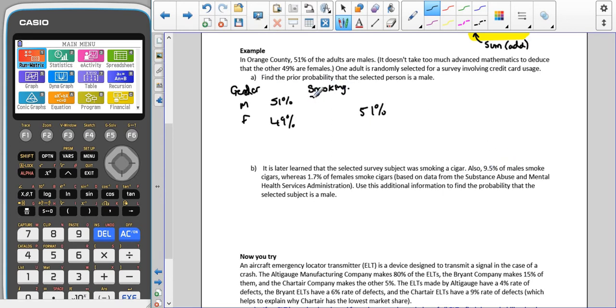9.5% of males are known to smoke cigars, whereas 1.7% of females is known to smoke cigars, based on data from substance abuse and mental health service administration. So now we're trying to use the additional information to find the probability that the selected subject is male. So the reason why I've done it in a table like this is that you could do it in a Venn diagram, but I'm just writing down the basic information. And this way, I can make sure I've got things the right way around. This first categorization here should always add up to 100%. And these will not add up to 100% in most cases.